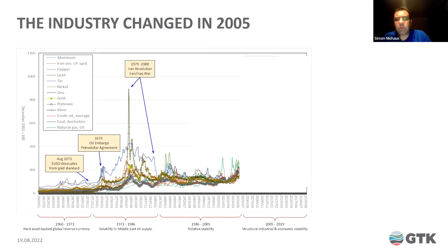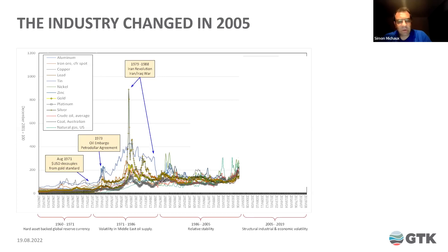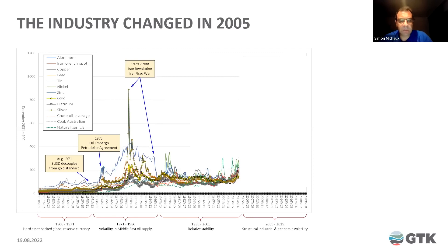These are the metal prices that the World Bank tracks to look at the health of the industrial ecosystem — the base metals, precious metals and energy: oil, gas and coal. I've overlaid these metal prices to the number 100 in the month of December 2001, and what I've done here is to show periods of relative stability.